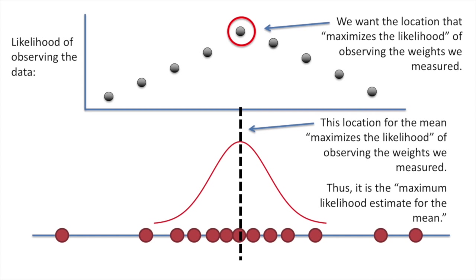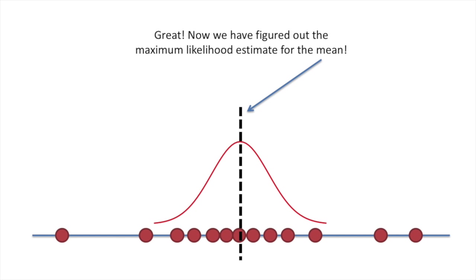In this case, we're specifically talking about the mean of the distribution, not the mean of the data. However, with a normal distribution, those two things are the same. Great! Now we have figured out the maximum likelihood estimate for the mean.